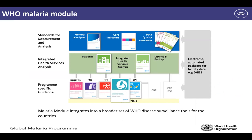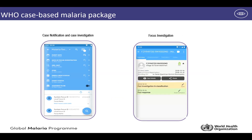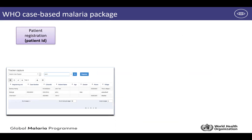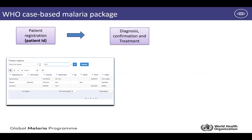The malaria module integrates into a broader set of WHO disease surveillance tools for countries to adopt — covering HIV, TB, EPI — so it's not only standalone modules but comes as a whole integrated package. The malaria case-based module has two main components: case notification and case investigation, as well as the foci investigation. The first part is patient registration, followed by diagnosis confirmation and treatment, then case investigations and foci investigation.